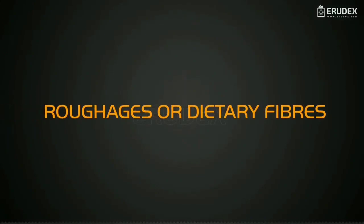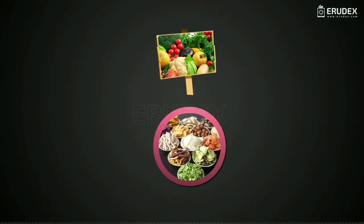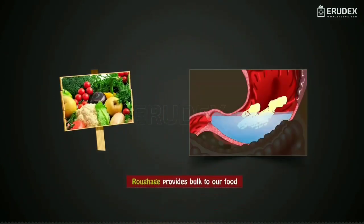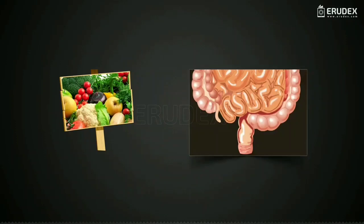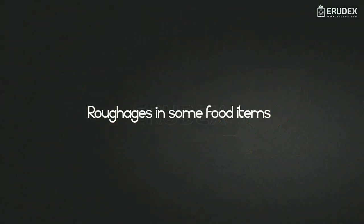Roughages or dietary fibers. Dietary fibers are also known as roughage and mainly occur in plant products. Though roughage does not provide nutrients to our body, it provides bulk to our food and helps the body get rid of undigested waste.